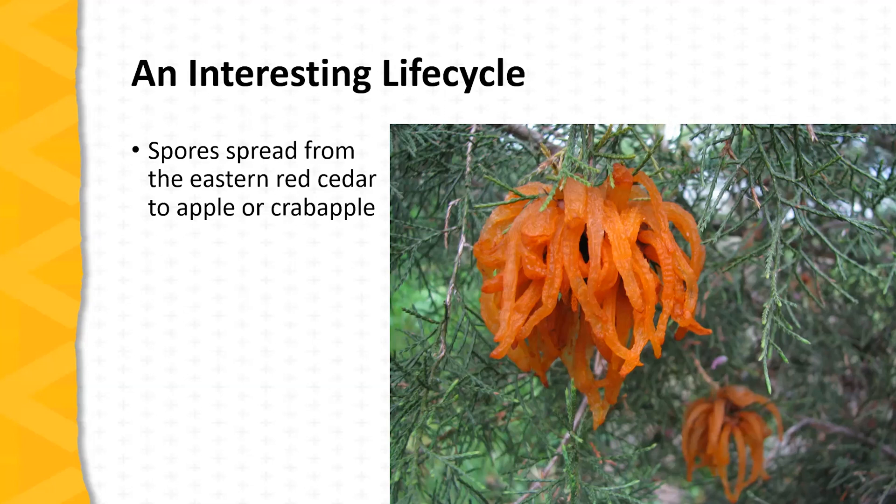Those hard knots begin to sprout orange growths called teliohorns, and they are dispersing spores that spread on the wind from the eastern red cedar to the next host in line, which is the apple tree or the crab apple.